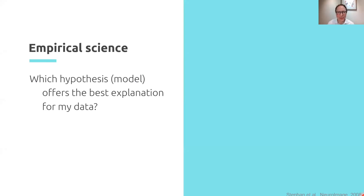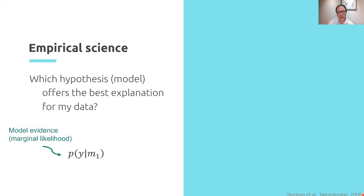It's also worth taking a step back and asking what's the point of science. You could say that the point of science is to ask, given I've got some hypotheses — some ideas about how my data were generated — I want to be able to test which hypothesis, or speaking more formally, which model offers the best explanation for my data. What you've heard about today is all about Bayesian statistics, and that all centres around a quantity that is really important: the model evidence. It's the probability that I would have seen my data given my model, model number one, M1.